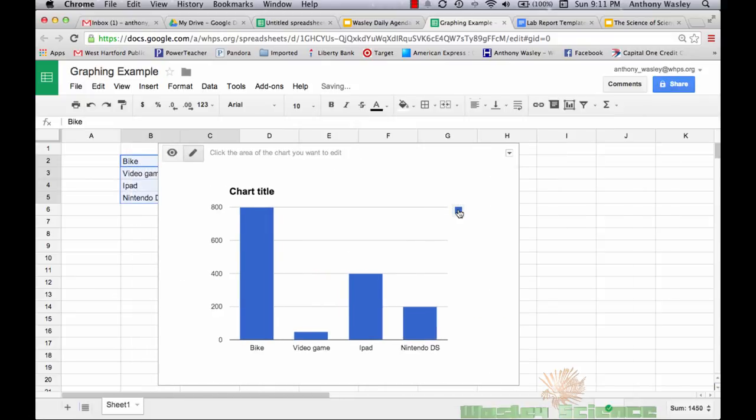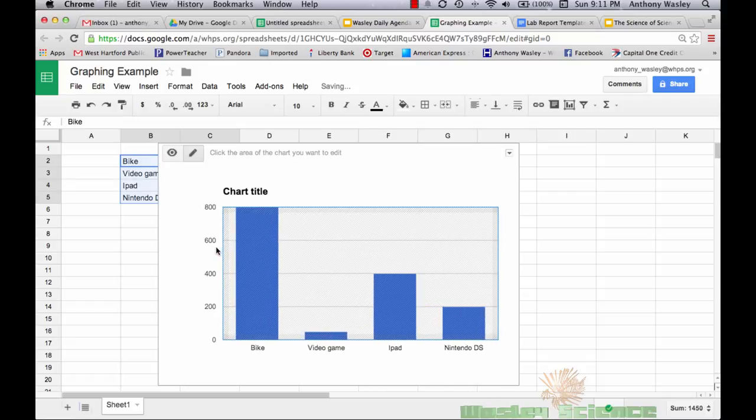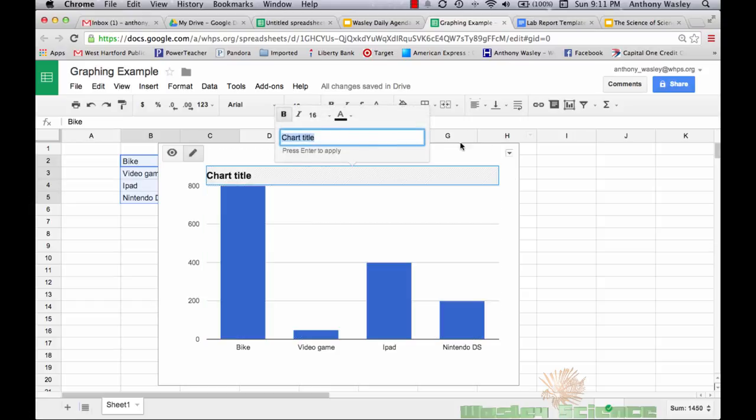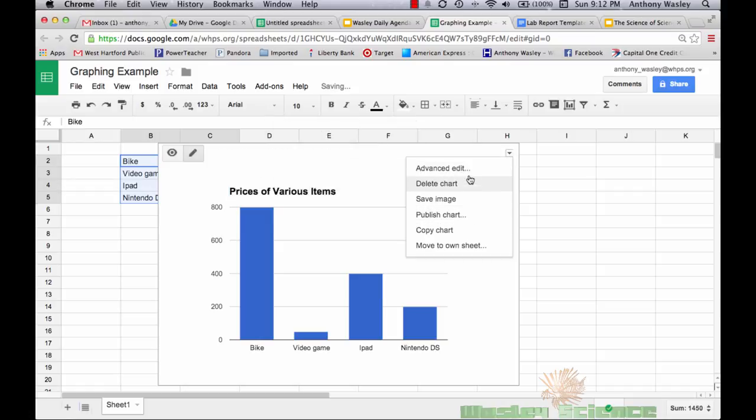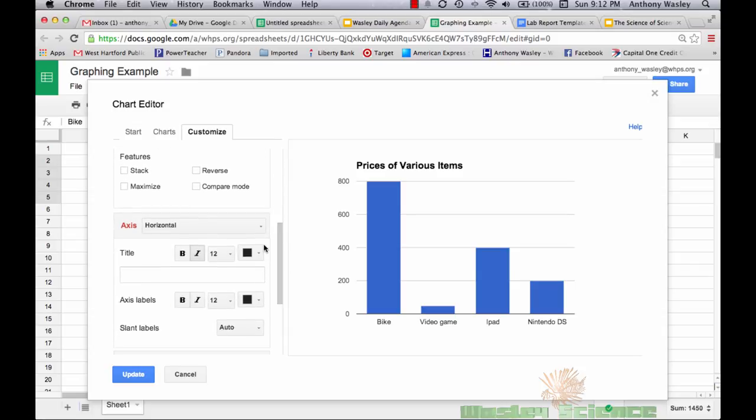All right, so now you have your column graph and the first thing I usually do is I get rid of that legend because it doesn't really seem useful in this sort of situation and then I just make everything a little bit bigger, stretch it out. All right, so now what you're going to want to do is label your title as well as your x and y axis. So you can just click on chart title here and change it. So rather than saying the effect of the IV on the DV I'm just going to call this prices of various items. Okay, and then to edit your x and y label, your x and y, you're going to want to go to advanced edit.